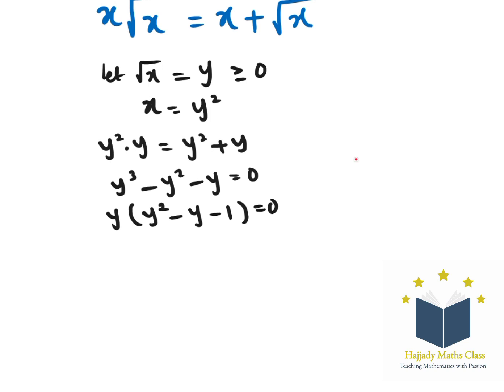Case number one: my y equals zero. And if y equals zero, automatically then my x will also equal zero. That is case number one.